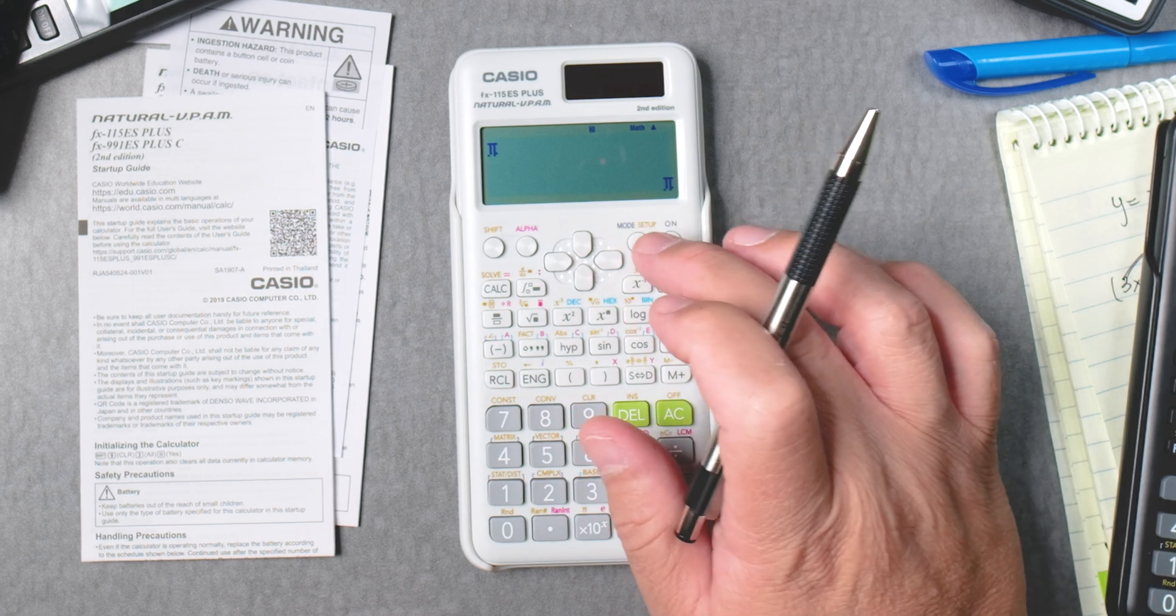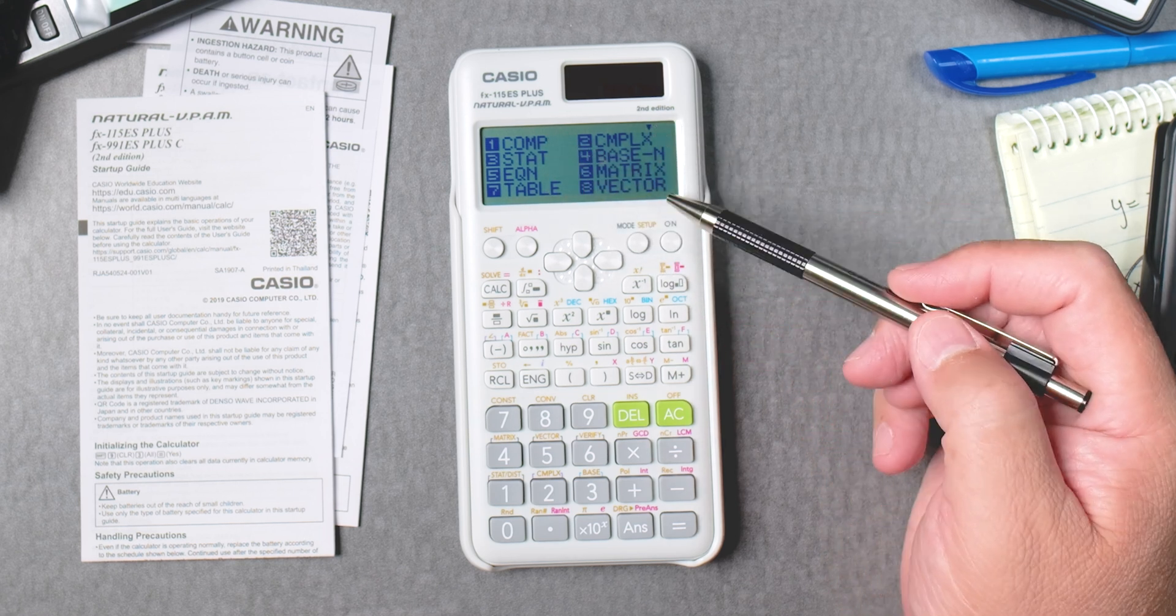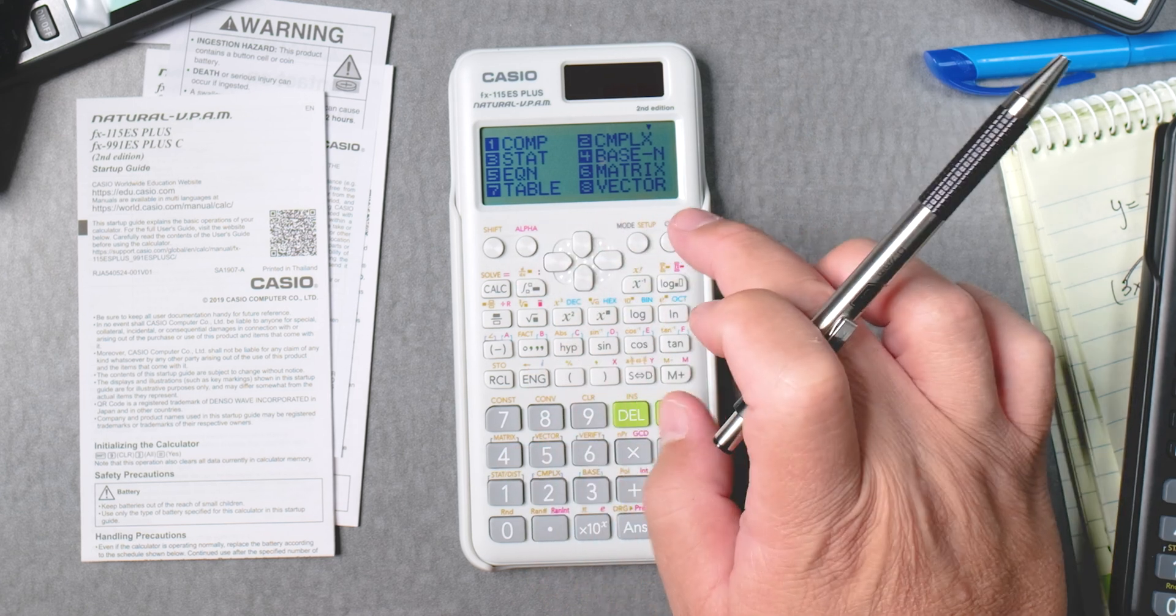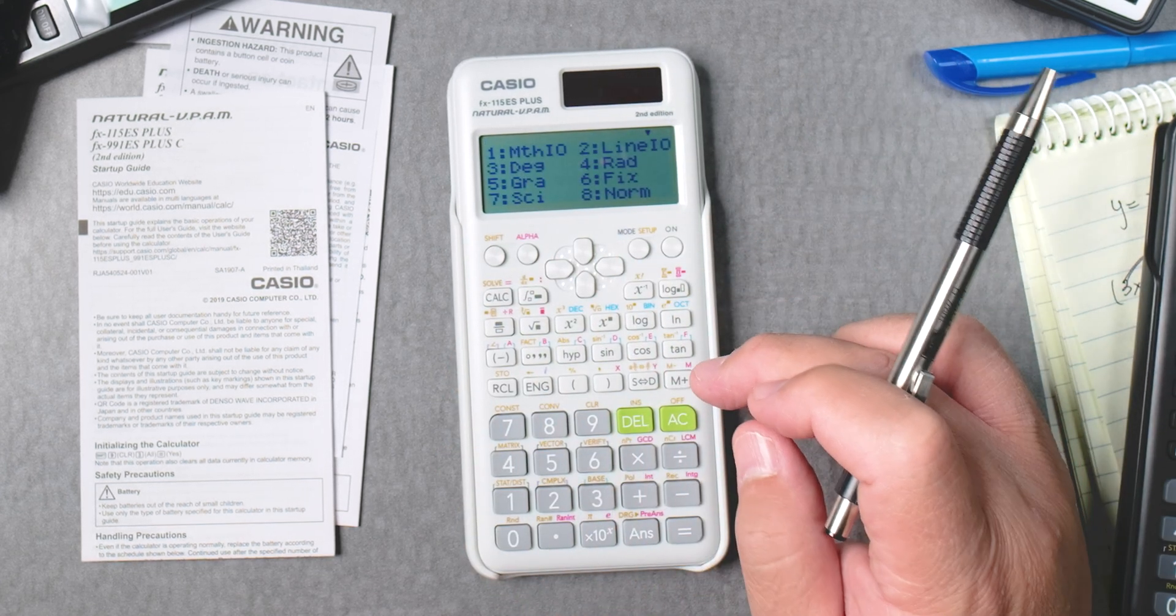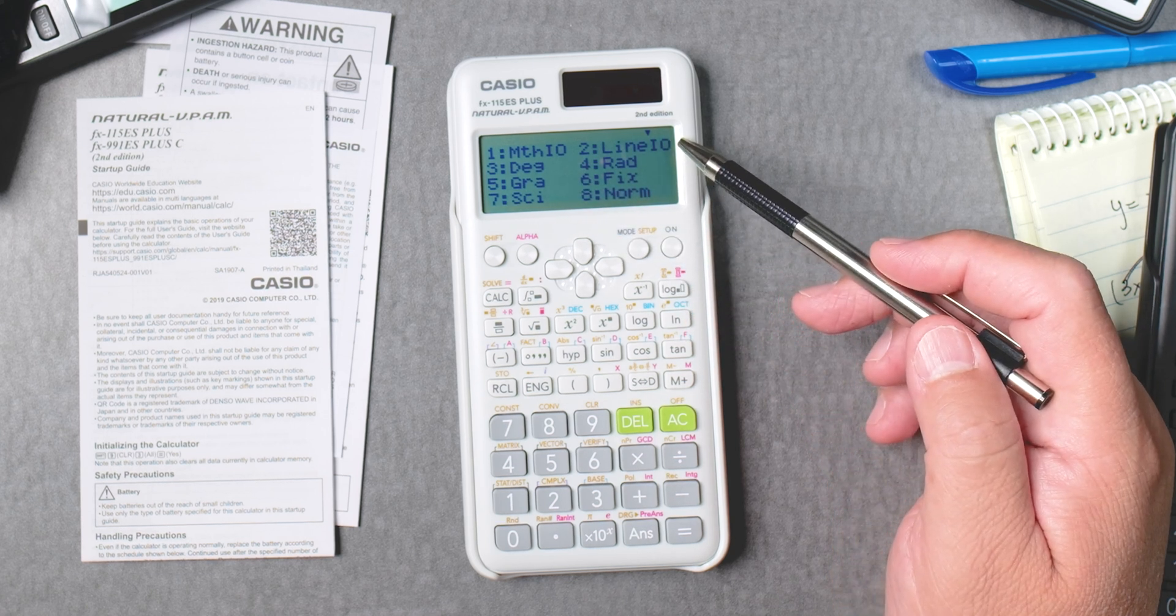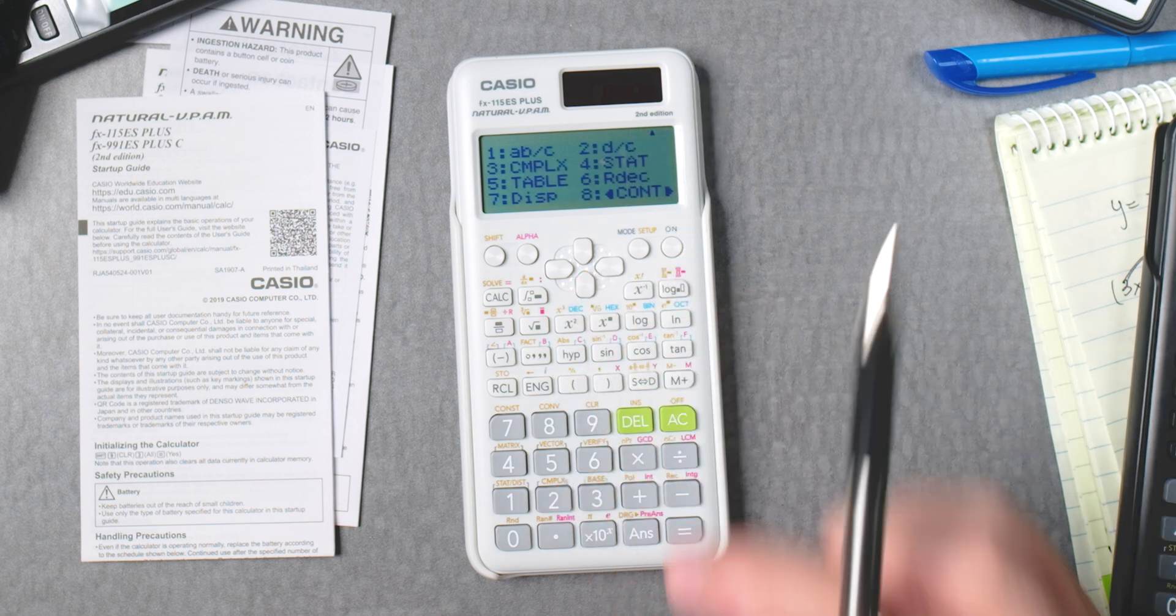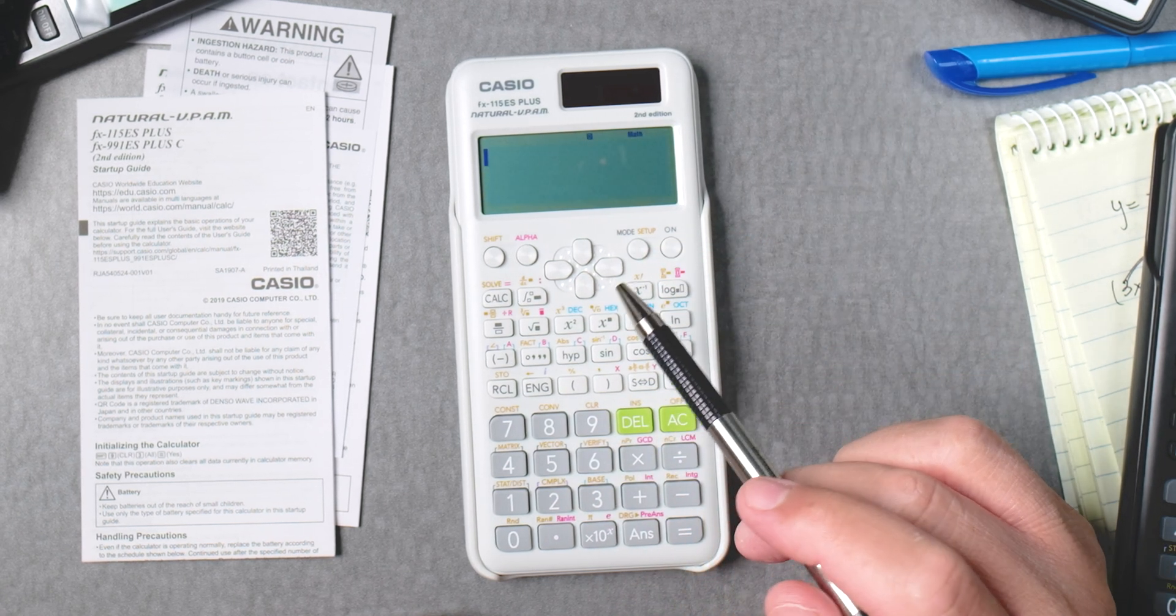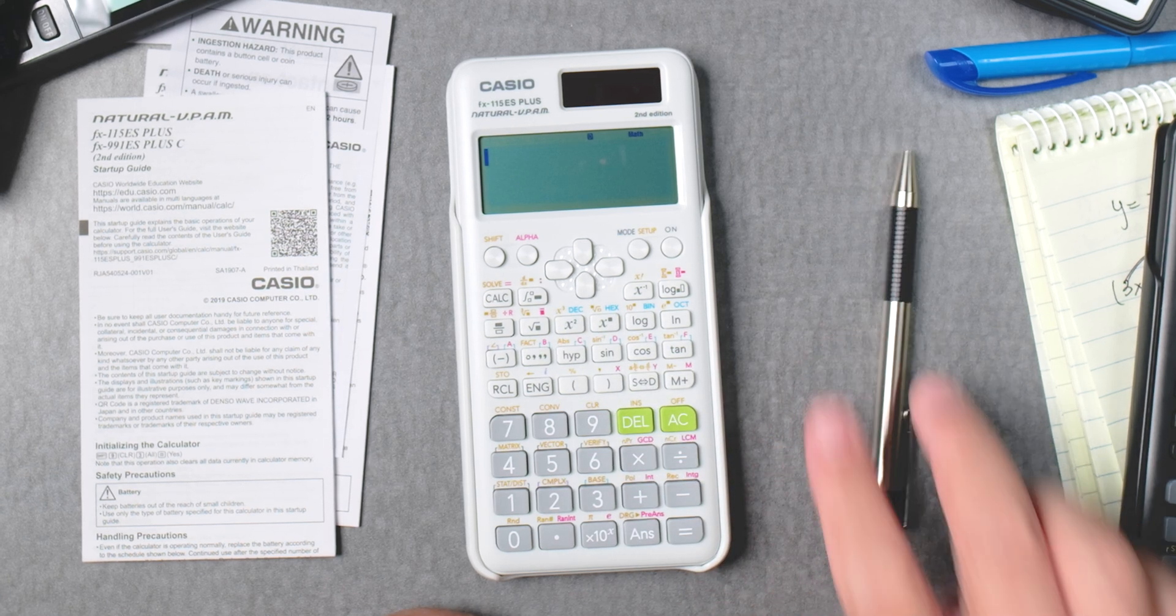And definitely, if we click on mode, we have all these and more. Interesting. And let's turn it on. What about shift mode? Math I.O. Degree. Grad. Psi. Line I.O. Rad. Fix. Normal. Anything else? That's it.